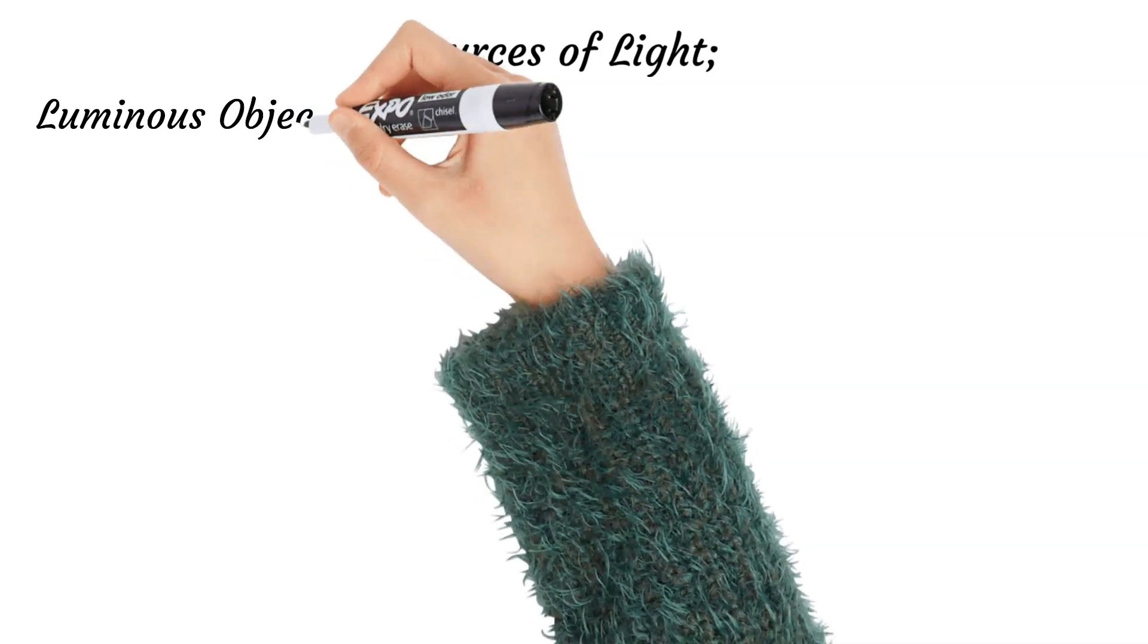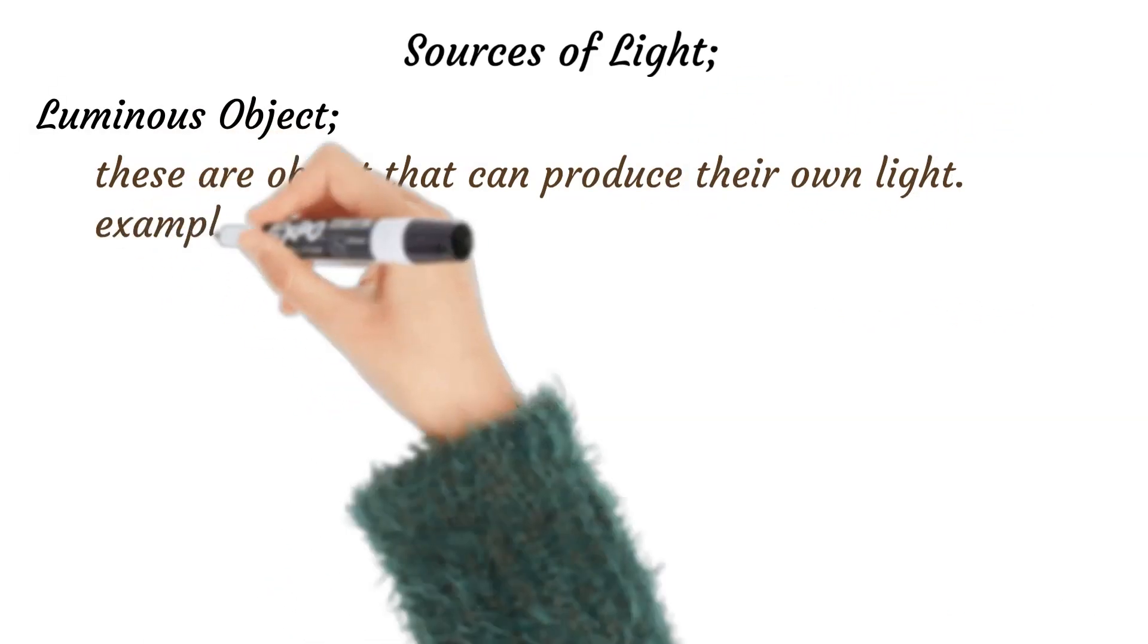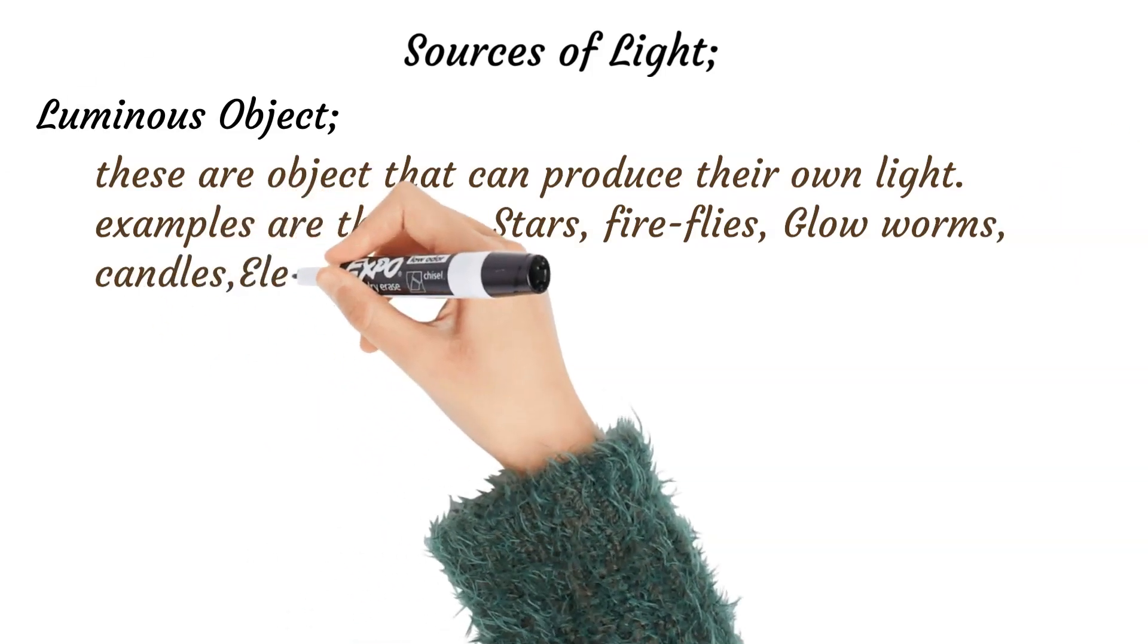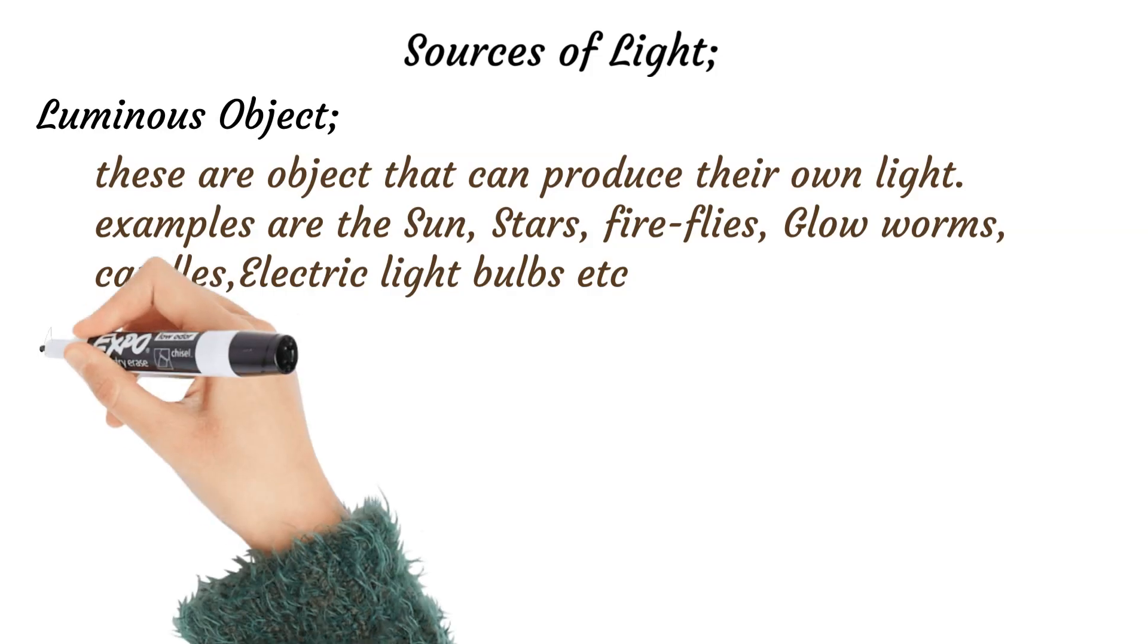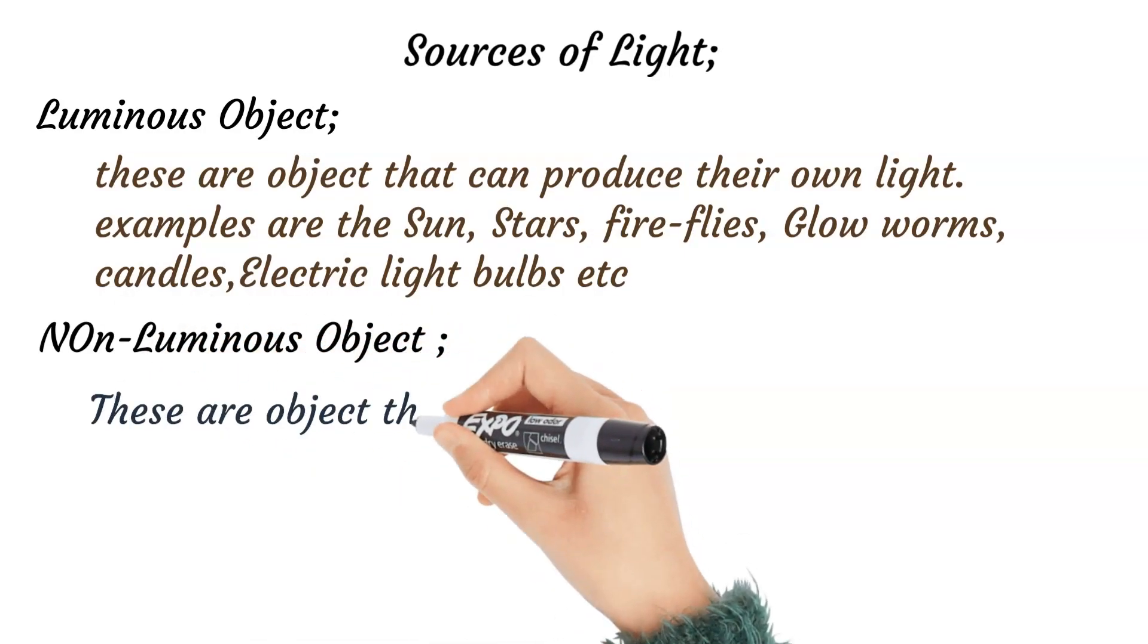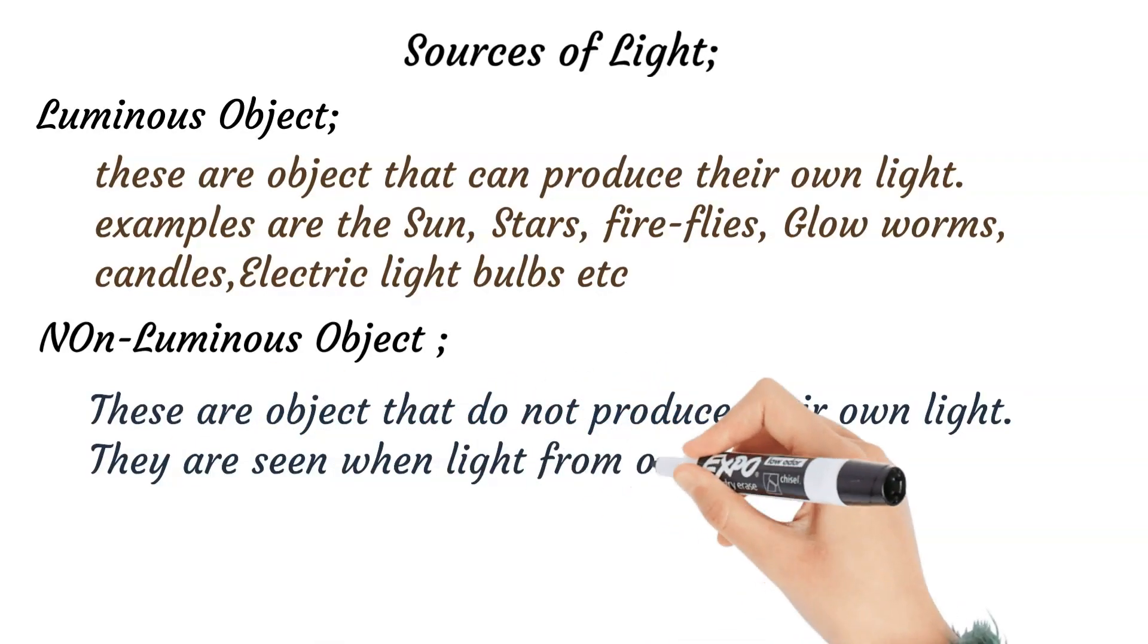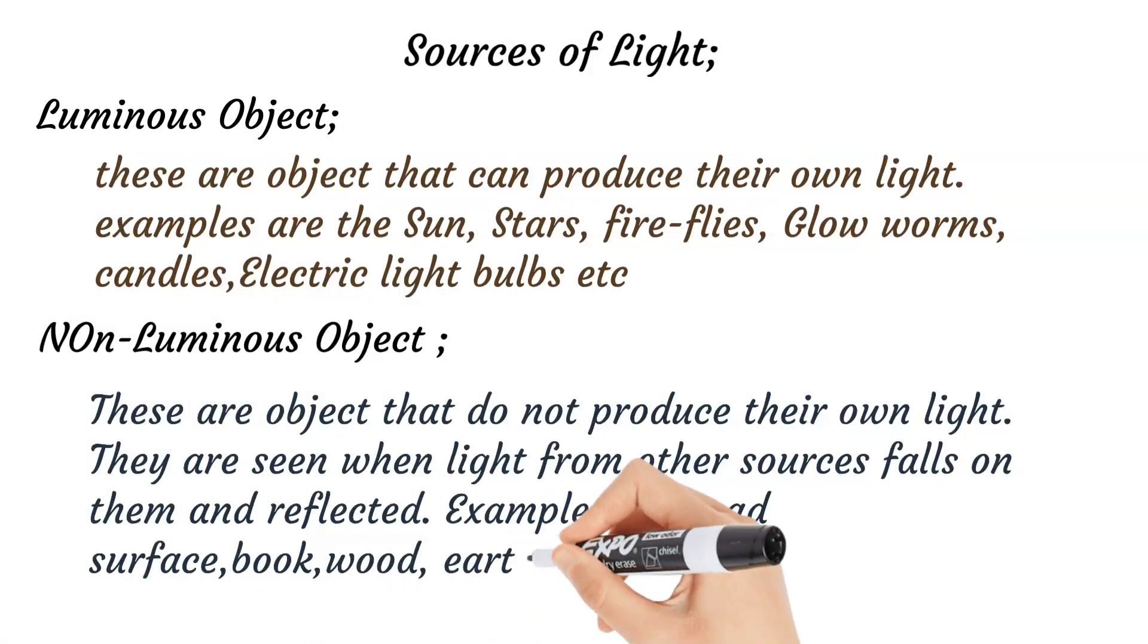Sources of light: we have two sources. Luminous objects are objects that can produce their own light. We have non-luminous objects - these are objects that do not produce their own light. They are seen when light from other sources falls on them. Examples: road surfaces, book surfaces, wood surfaces, and so on.